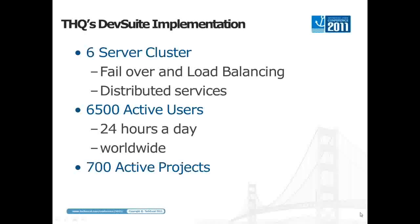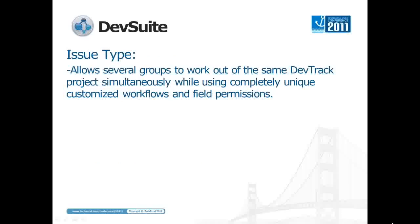One of the key features we use in DevTrack is a feature called issue type. Issue type allows us to create issue tracking projects that have multiple workflows. A lot of times development teams like to have extremely streamlined workflows — they're only interested in separating bugs, fixing them, and closing them. They're not really interested in workflows that might track other aspects of the life cycle of a bug.